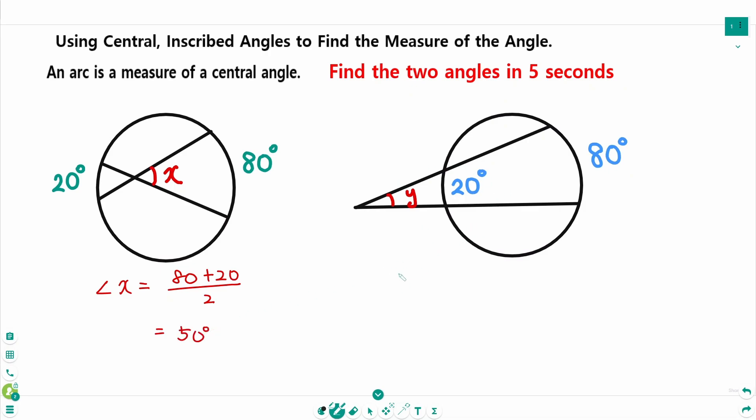Angle y equals 80 minus 20 over 2, equals 60 divided by 2, is 30 degrees.